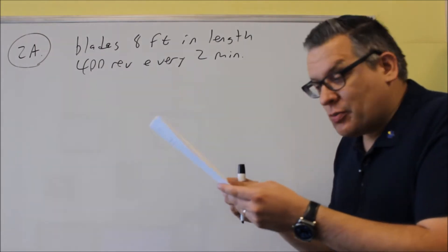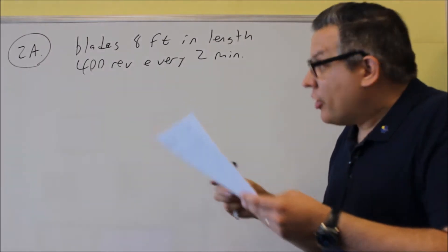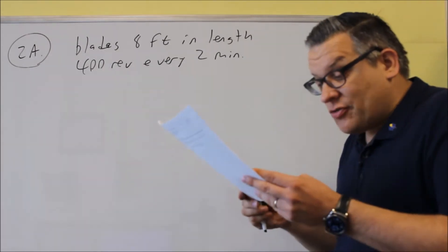One machine used to generate electricity has blades that are 8 feet in length and it says that the blades rotate at 400 revs every two minutes. So it's asking us for two things.